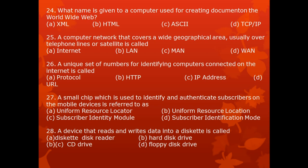Question 28. A device that reads and writes data into a diskette is called: A. Diskette Disc Reader, B. Hard Disc Reader, C. CD Drive, D. Floppy Disc Drive.